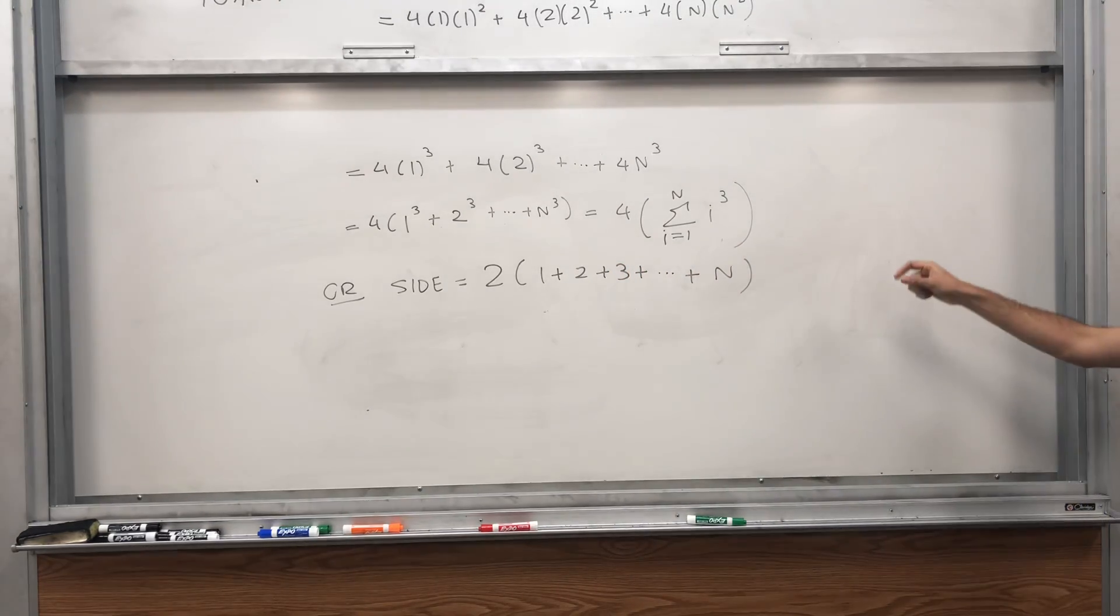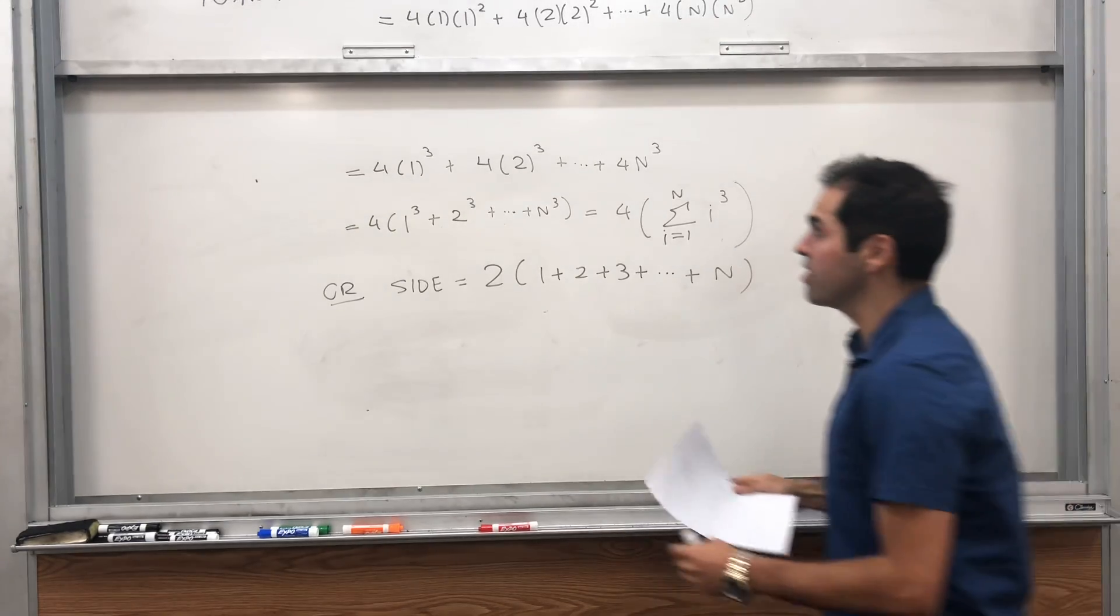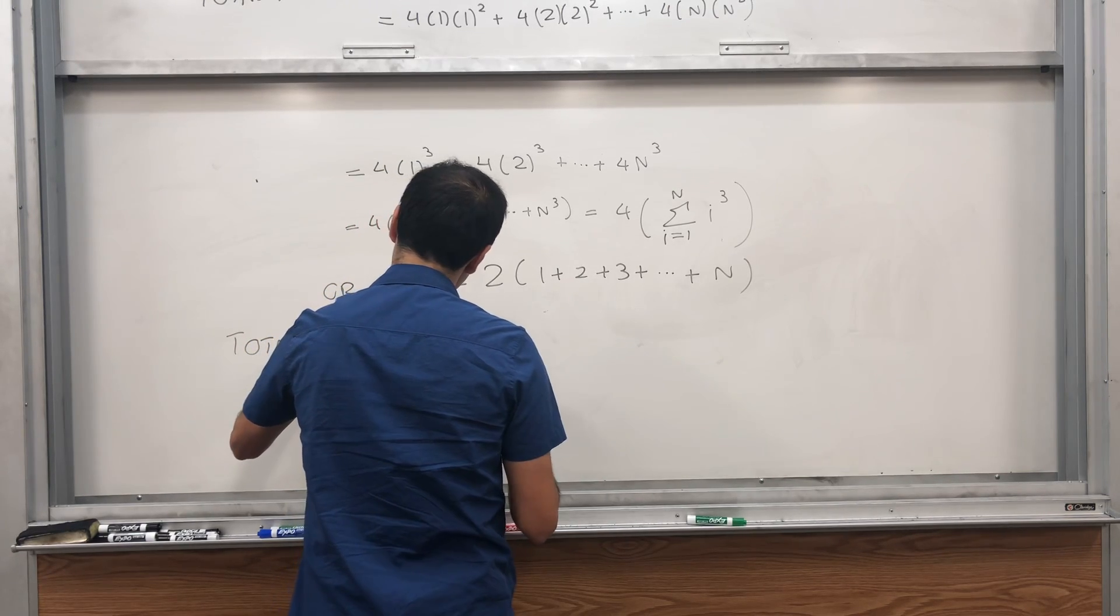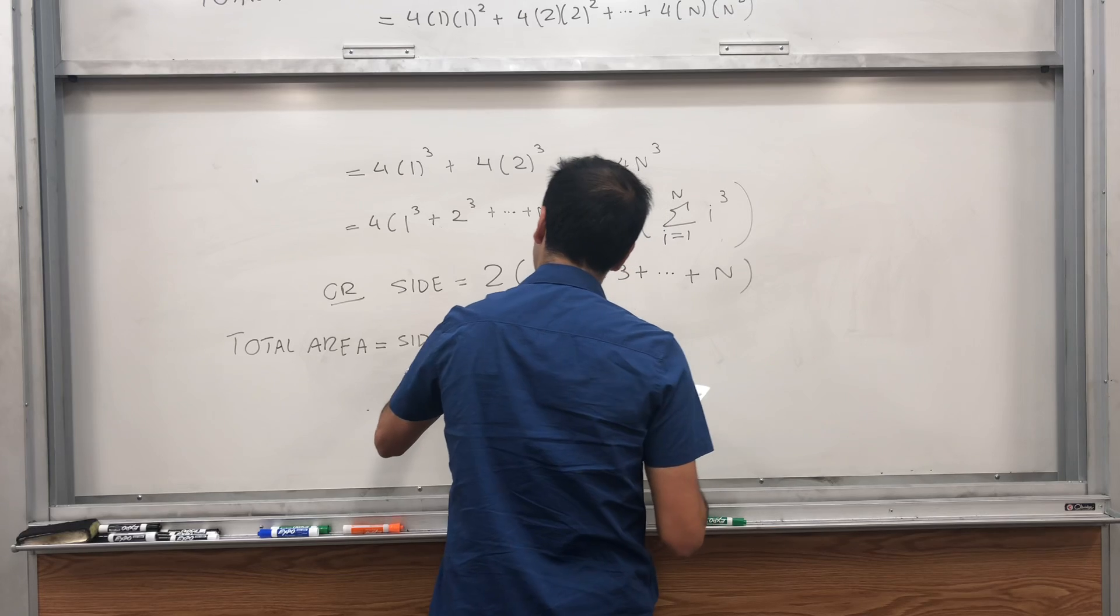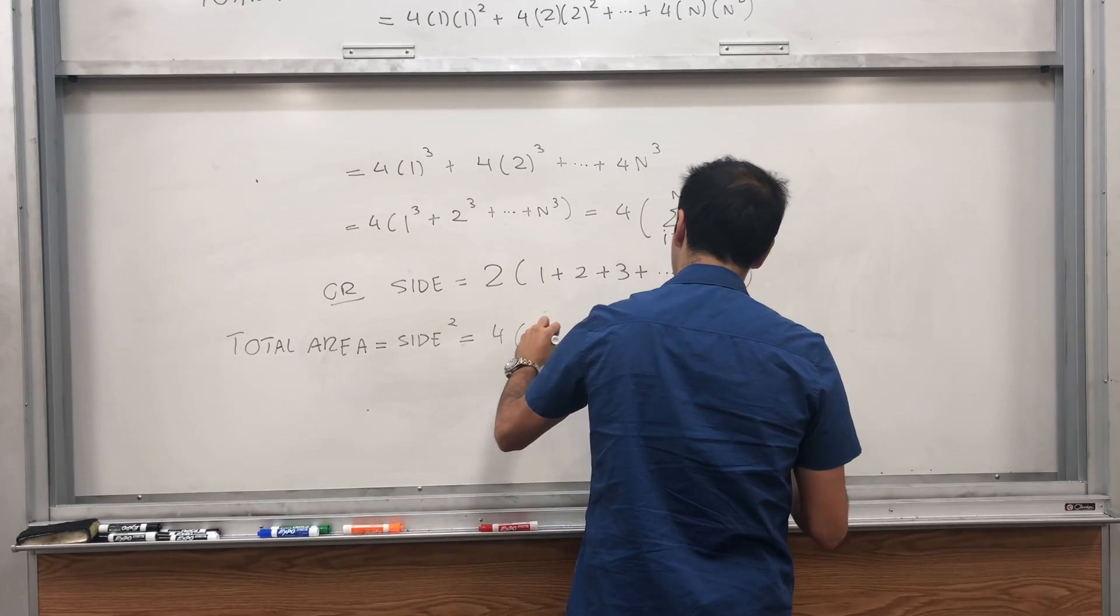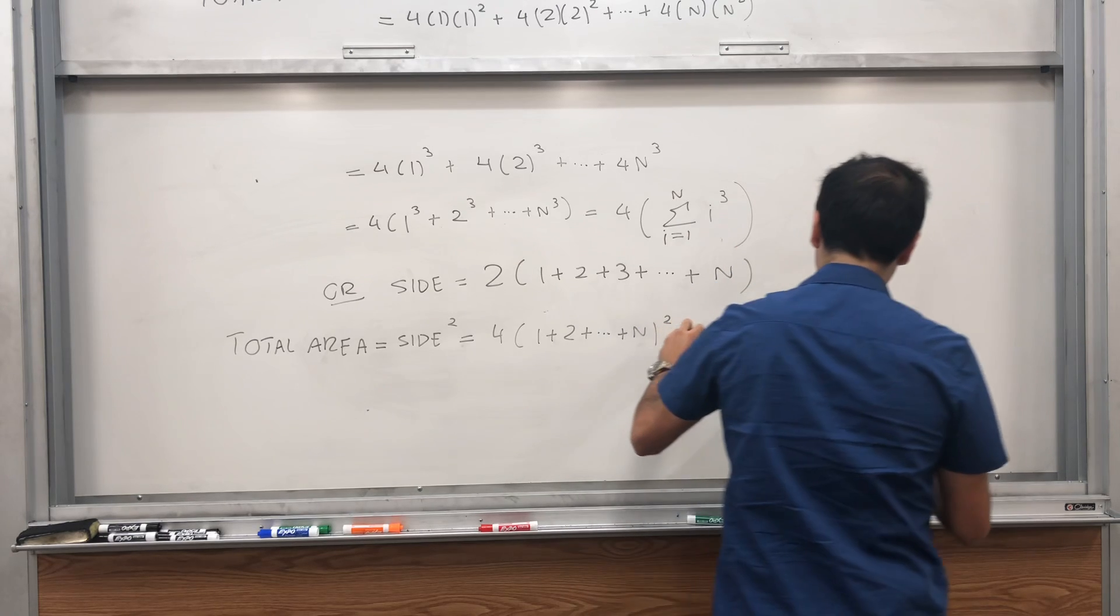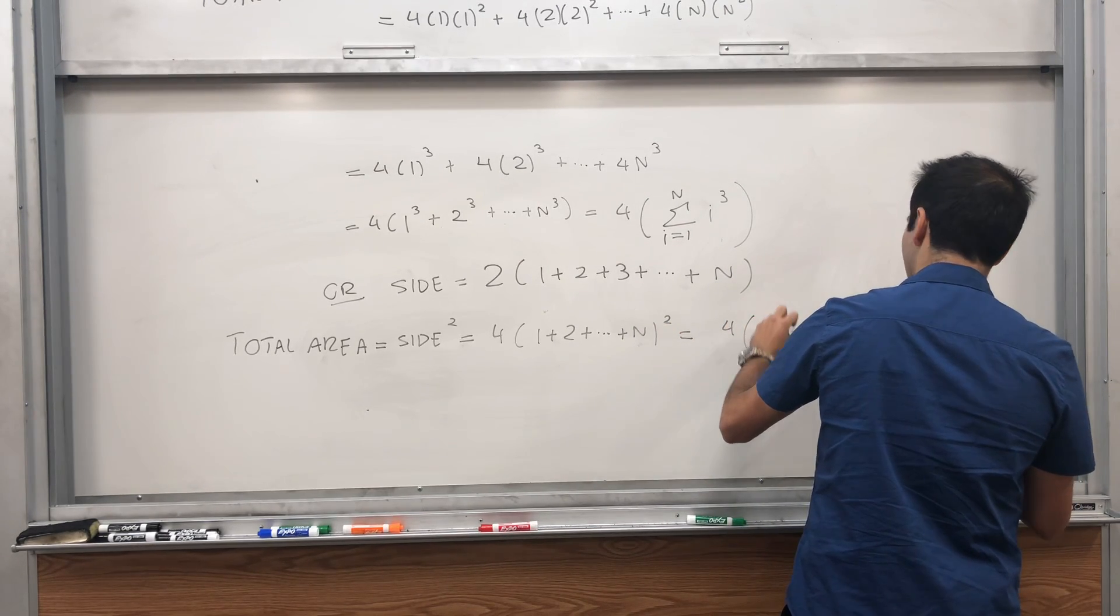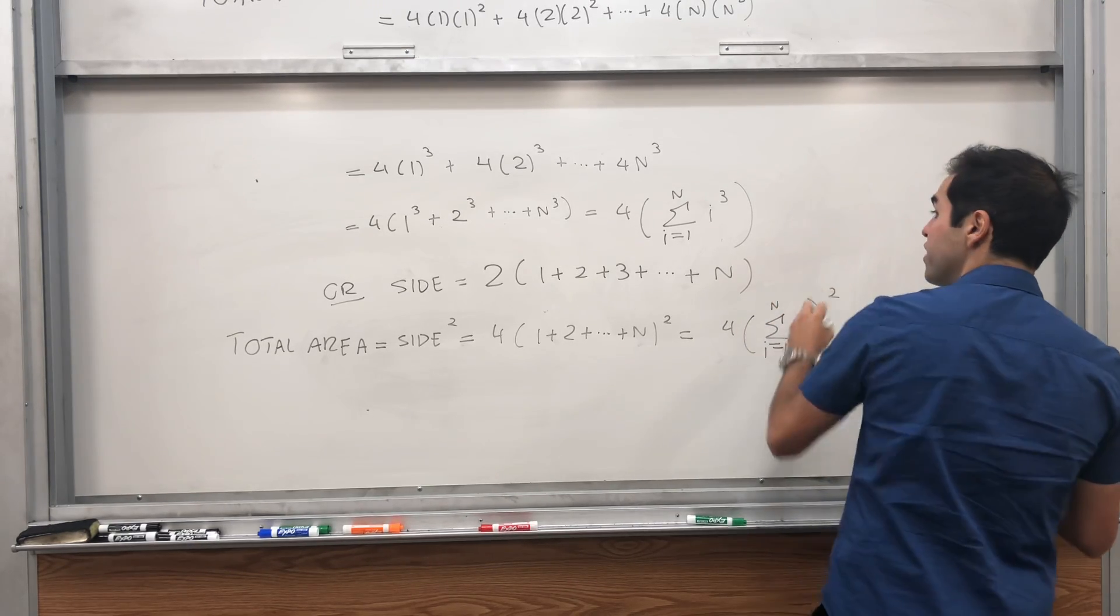So what is the total area? It's the side squared. So total area is side squared. And that then just becomes 4 times 1 plus 2 plus dot dot dot plus n, squared, which is 4 times the sum of the integers squared.